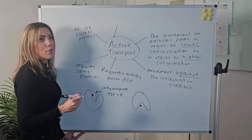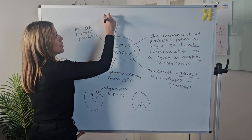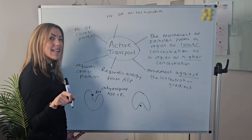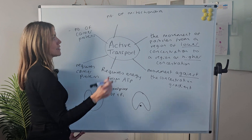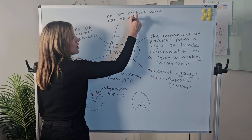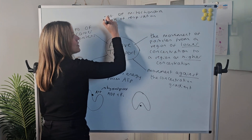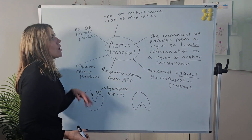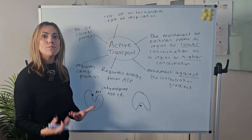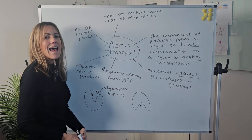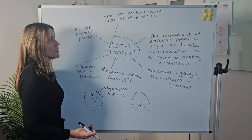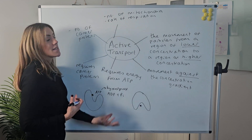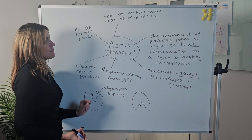You could also think about the number of mitochondria in the cell performing active transport, or the rate of respiration. Active transport requires ATP, so cells with more mitochondria can do more aerobic respiration, make more ATP, and therefore have more energy available for active transport. Equally, if the rate of respiration is higher in the cell, the cell makes more ATP and can do more active transport.